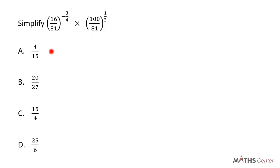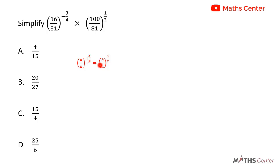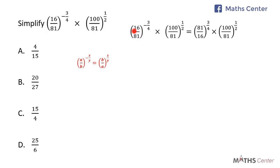This is a multiple choice question. From indices, we know that if we have (A divided by B) to the power of negative X over Y, it can be written as (B divided by A) to the power of X over Y — the numerator and denominator swap, and the negative exponent becomes positive. Applying this, 16 over 81 to the power of negative 3/4 equals 81 over 16 to the power of 3/4.